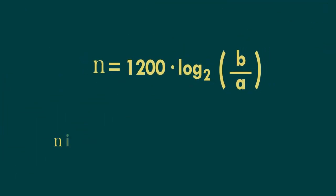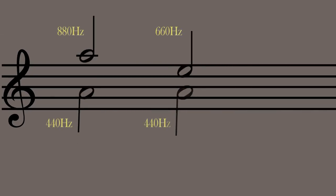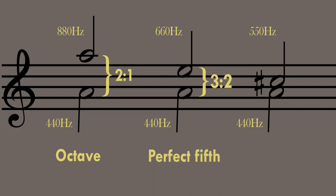If we know the frequencies of two tones, we can easily calculate the number of cents between them. In physical terms, a musical interval is the ratio between two sonic frequencies. For example, any two notes an octave apart have a frequency ratio of 2:1, while a perfect fifth would have a 3:2 ratio and a major third a 5:4 ratio.